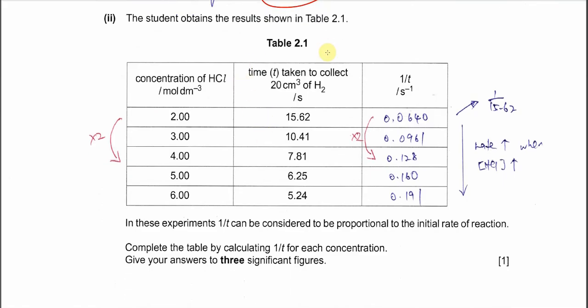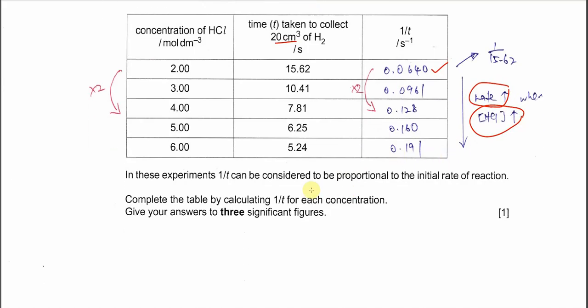Part 2. The student obtains results in table 2.1. In this experiment, 1/t can be considered to be proportional to the initial rate of reaction, so this can represent the rate of reaction. Complete the table by calculating 1/t. The more concentrated one is actually faster - it's 5.24 seconds. We just use 1 over time. For the first one, 1 over 15.62, we get this. Do the same thing for the rest. When concentration increased, the rate also increased - the value is larger. Of course, the answer is 3 significant figures, so all these values must be 3SF.